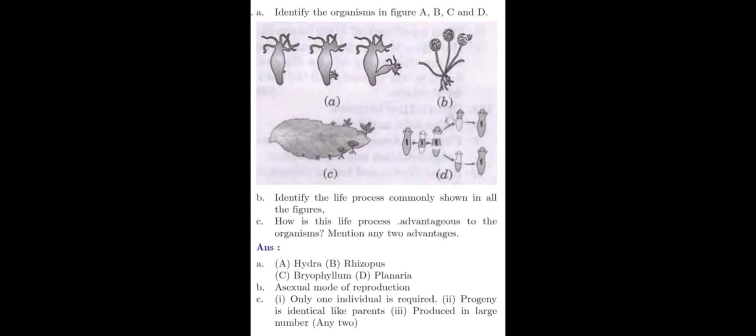Question number 8. Identify the organisms in figure A, B, C and D. Four figures are given here. You can observe them carefully. Here is another question. Identify the life process commonly shown in all the figures. Third question is how is this life process advantageous to the organisms? Mention any two advantages. Hope you are clear with the questions.